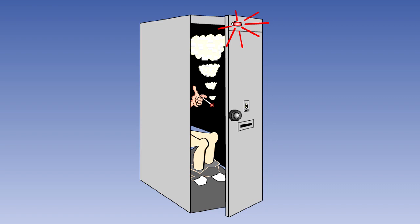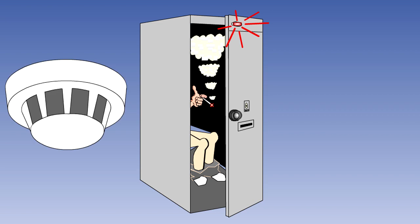Ionization smoke detectors are commonly found in domestic units and aircraft toilets. Most aircraft smoke detectors, with the exception of those used in toilets, are of the optical type.